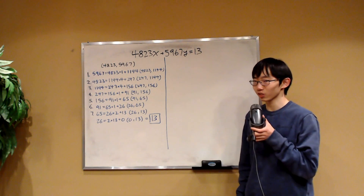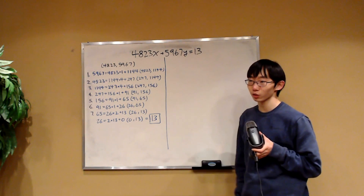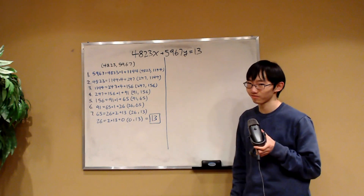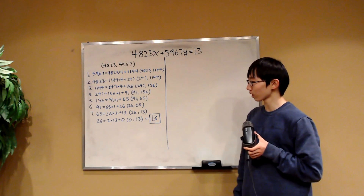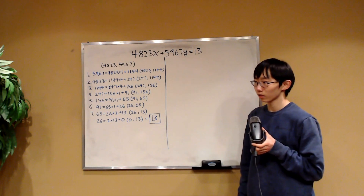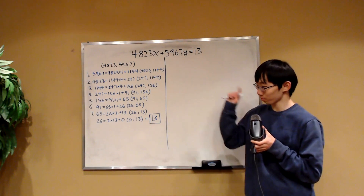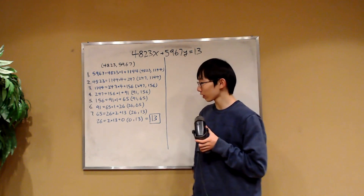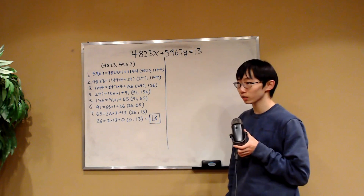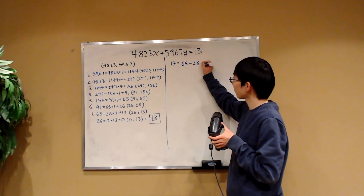Since 13 clearly divides 13, there exists a solution. Now we don't just want to prove a solution exists — we want to explicitly find it. The key is that we can work the entire Euclidean algorithm process backwards. From stage 7, we move 26 times 2 onto the other side, giving us 13 = 65 − 26×2.